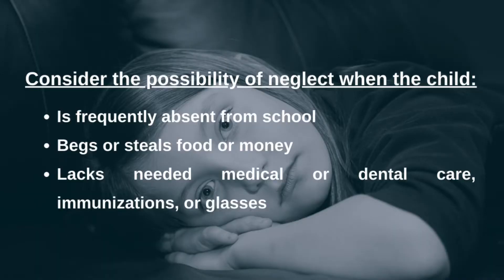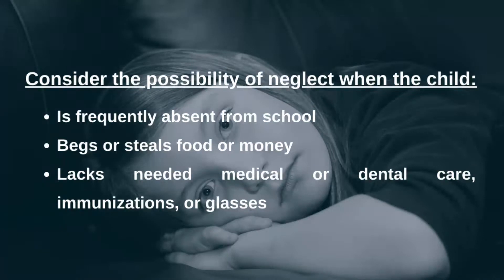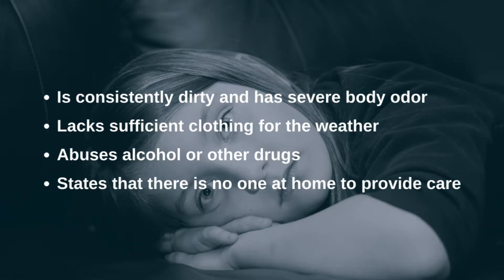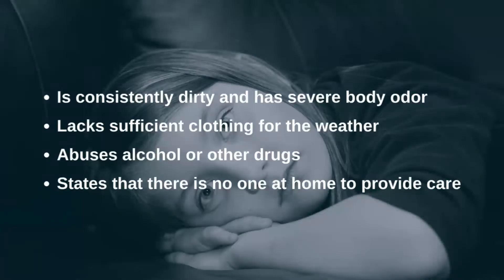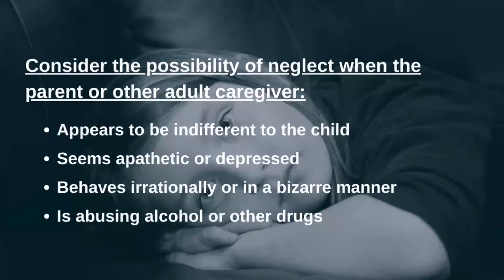You consider the possibility of neglect when the child is frequently absent from school, begs or steals food or money, lacks needed medical or dental care, immunizations or glasses, is consistently dirty and has severe body odor, lacks sufficient clothing for the weather, abuses alcohol or other drugs, or states there is no one at home to provide care.